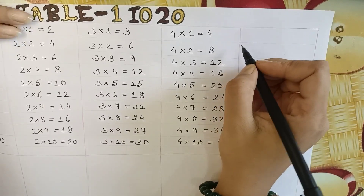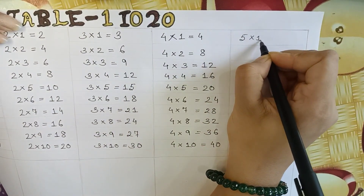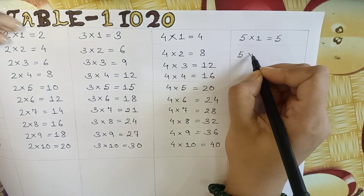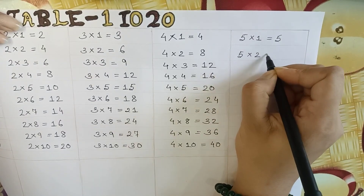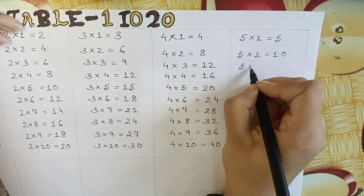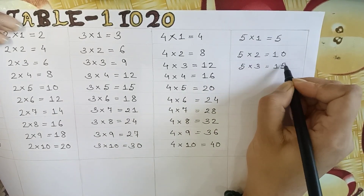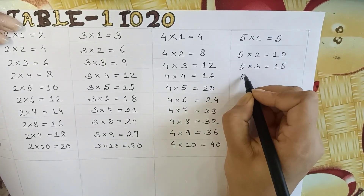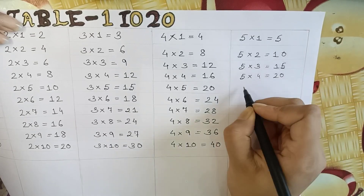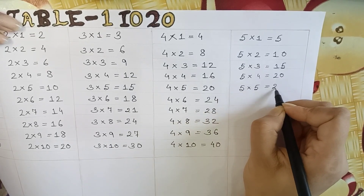Okay, next, 5 table. 5 x 1 is equal to 5. 5 x 2 is equal to 10. 5 x 3 is equal to 15. 5 x 4 is equal to 20. 5 x 5 is equal to 25.